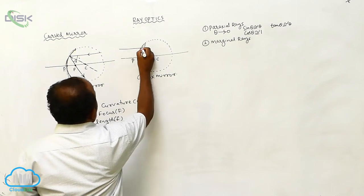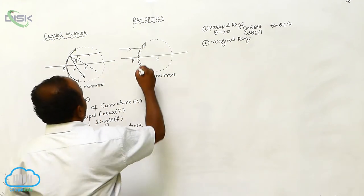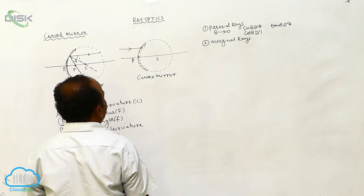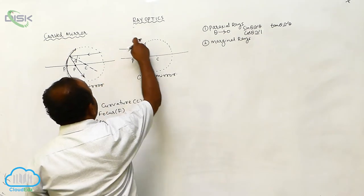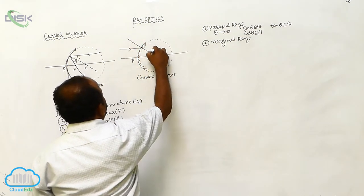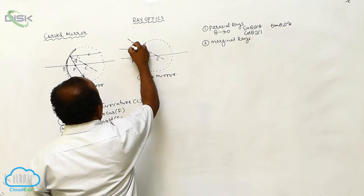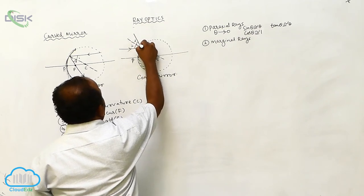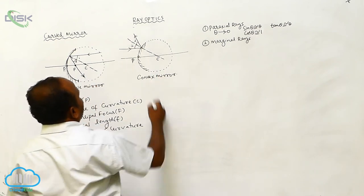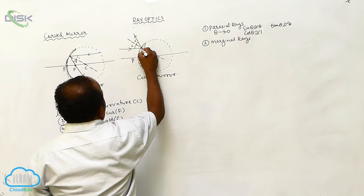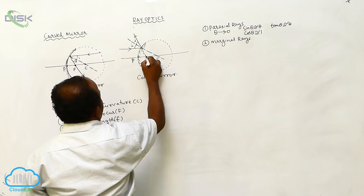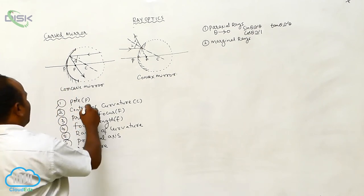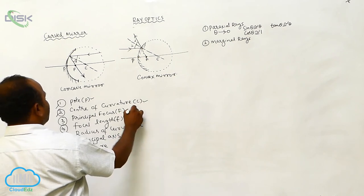Similarly, for another incident ray parallel to the principal axis, the normal at the point of incidence passes through the center of curvature. The reflected ray, when extended back, intersects at a particular point on the principal axis. That point is also called the principal focus. The pole, center of curvature, and principal focus are all points.